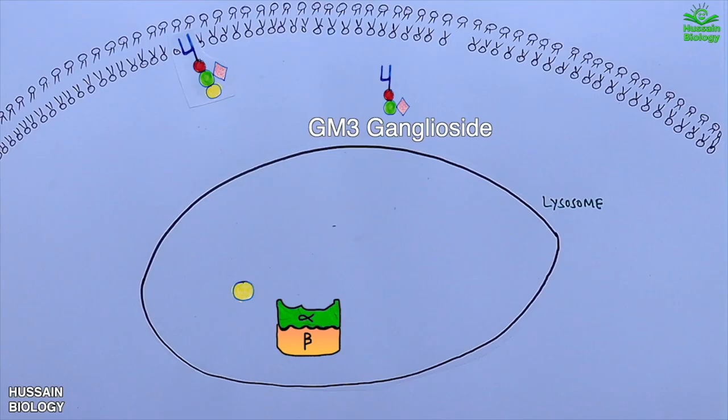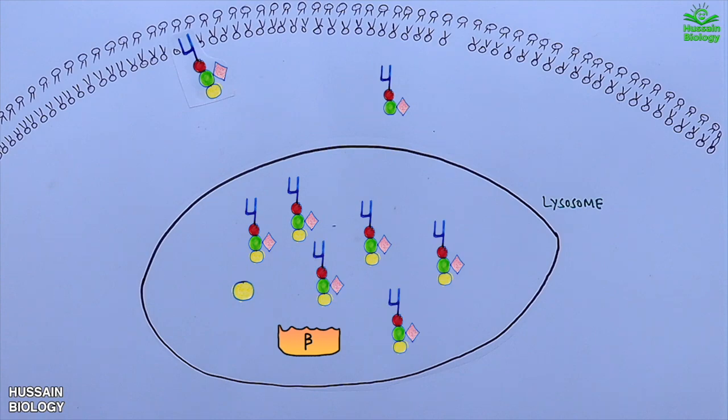But when we have the mutation in the HEXA gene by base pair insertion as TATC, the hexa protein or enzyme will be absent and we won't get any GM2 hydrolysis. The accumulation of GM2 occurs within the cell and damages the nerves.